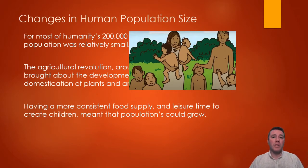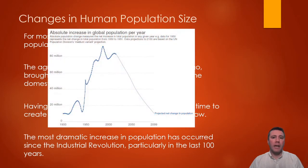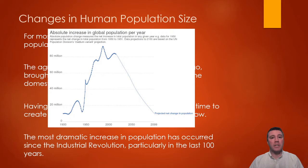The most significant increases in population occurred after the Industrial Revolution began, but especially in the last century. Although the last hundred or so years have seen different population increases from year to year, the 20th and first fifth of this century easily saw the greatest increase, from about 1.6 billion people in 1900 to nearly 8 billion today.